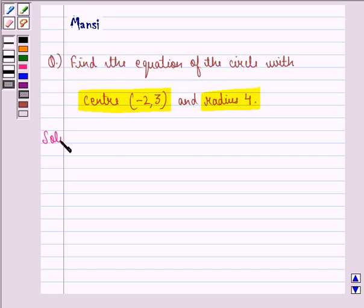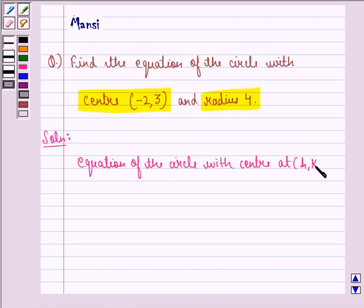So let us start with the solution to this question. First of all we see that equation of the circle with center at the point (h, k) and radius r is given by (x - h)² + (y - k)² = r².